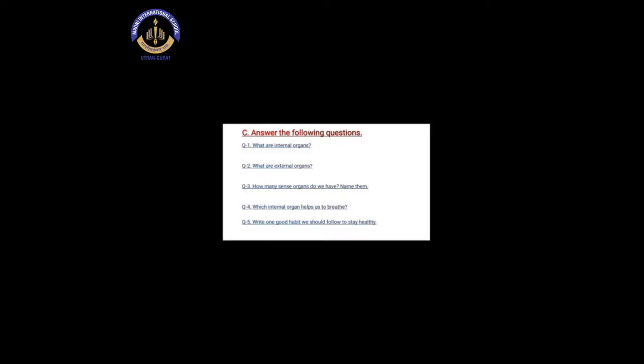I hope you all are ready with your notebook. First, in the first line write the heading: 'Answer the following questions.' Now question number 1: what are internal organs? As we all know, we have two main organ parts — internal organs and external organs. The answer is: the organs that are present inside the human body are called internal organs. For example, brain, lungs, stomach and heart.